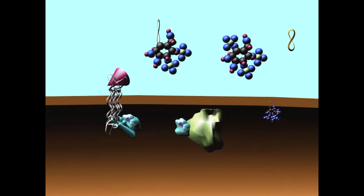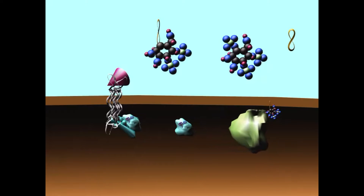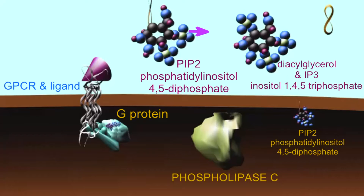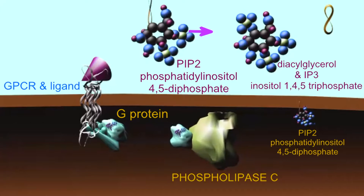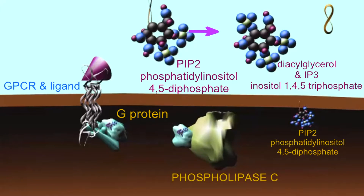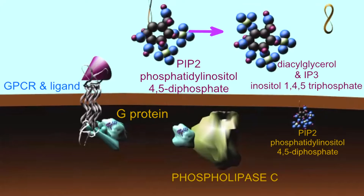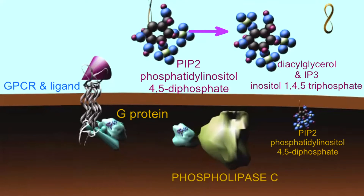One very common second messenger is IP3, inositol-1,4,5-triphosphate. Enzymes such as phospholipase can convert the precursor, PIP2, phosphatidyl inositol-4,5-diphosphate,